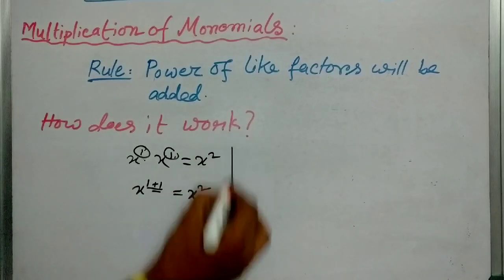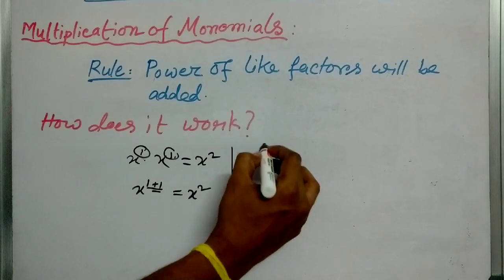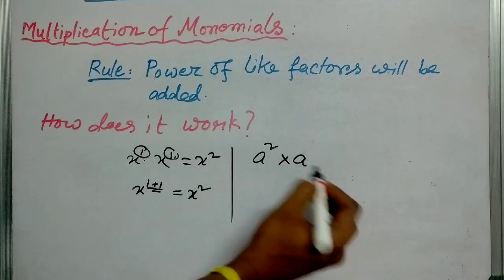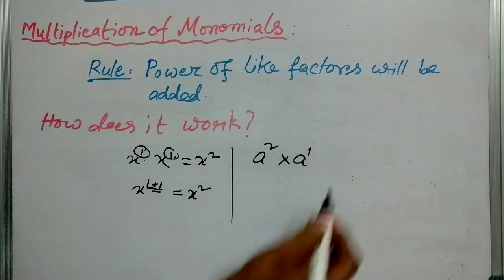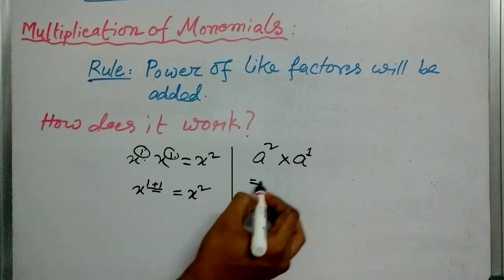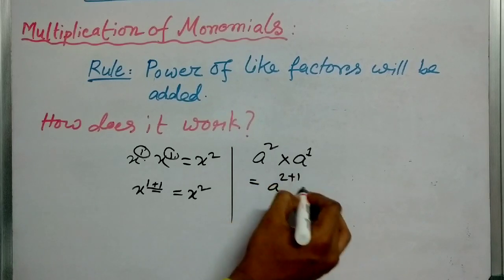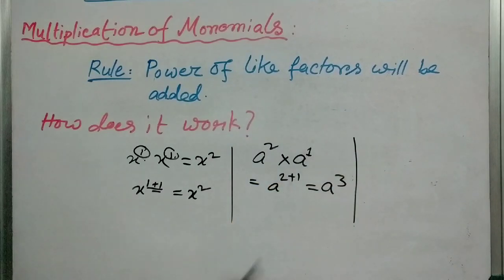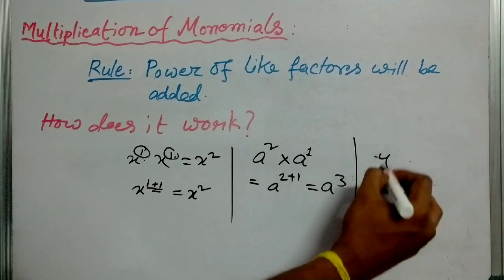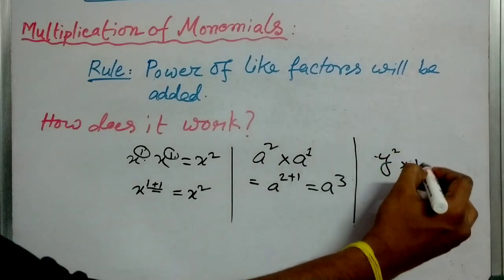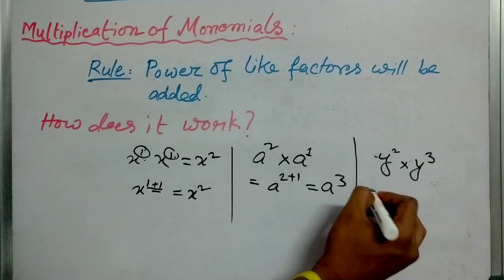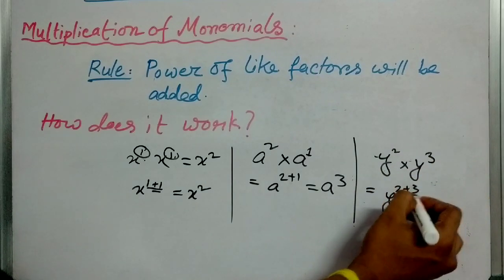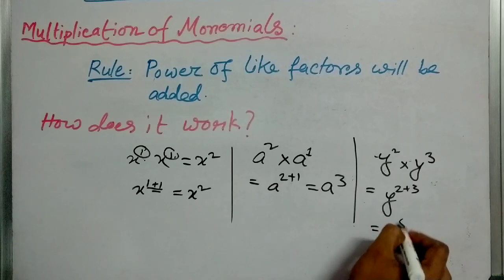Similarly, if we take x squared into a, then here a has power 1, so that means a to the power 2 plus 1, which is a cubed. Now, if I multiply y squared into y to the power 3, then it will be y to the power 2 plus 3, and this is y to the power 5.